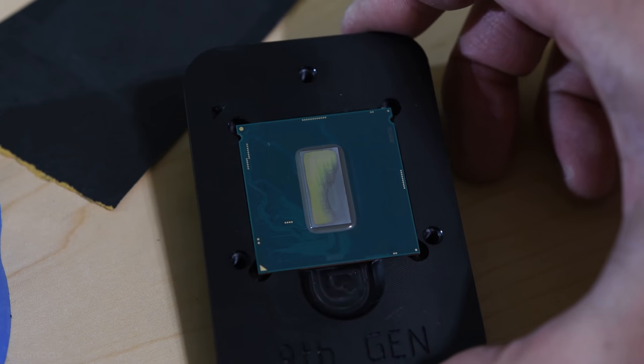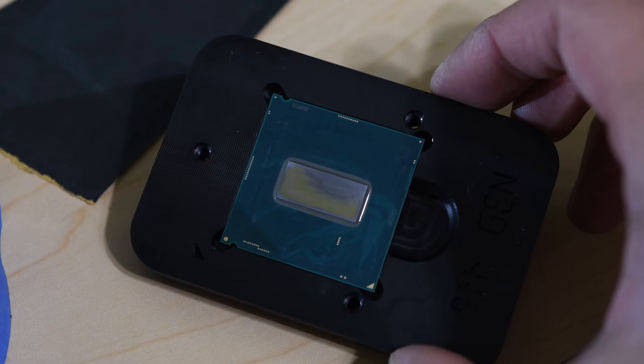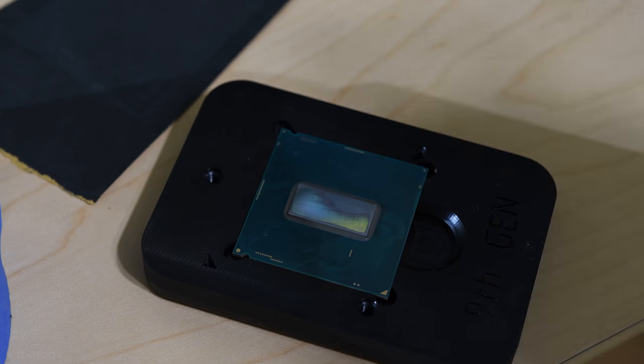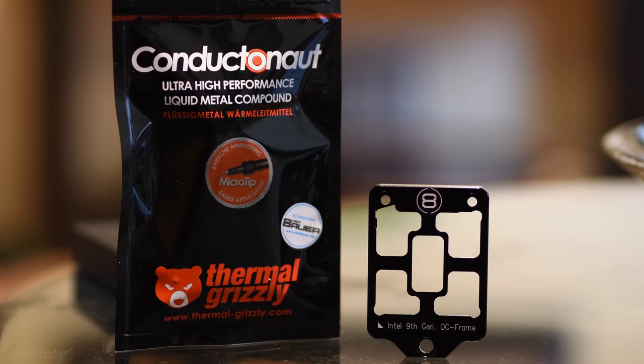Here it is after application of Flitz polish. As for liquid metal, I went with the trusty old Conductonaut.